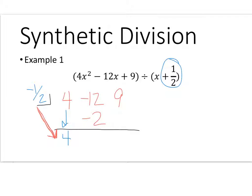From here, I'm going to add those together. Negative 2 minus 12 is negative 14. So again, I'm going to take negative one half and multiply it to negative 14.